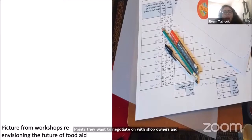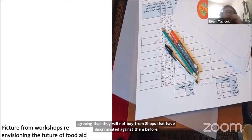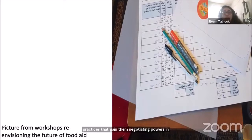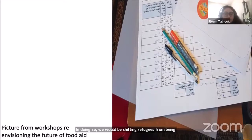Shop owners offered discounts and even delivery because of the large purchases. Women started extending the process to other refugees outside their geographical community, voicing what points they want to negotiate with shop owners and agreeing they will not buy from shops that have discriminated against them. The configuration of the potential technology enables refugees to action collective practices that gain them negotiating power — shifting refugees from individuals that aid is acted upon, to collectives that negotiate aid.